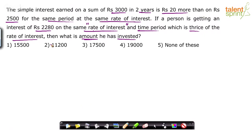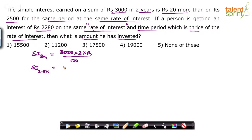Now, how do we get the rate of interest from the first part of the question? On 3000 in two years and 2500 in the same period at the same rate. So, SI on 3000 equals P×T×R/100, which is 3000 × 2 × R / 100. SI on 2500 is 2500 × 2 × R / 100. The difference between these two values is 20, so SI of 3000 minus SI of 2500 equals 20.